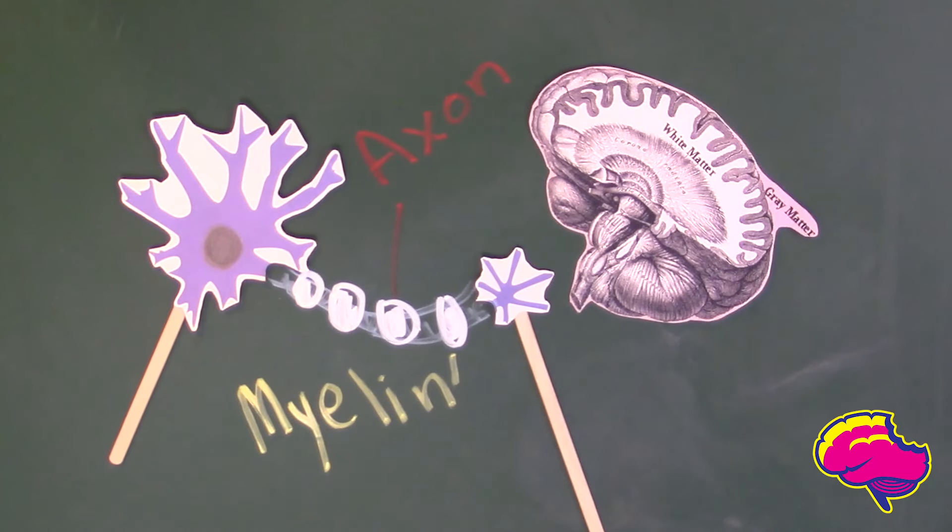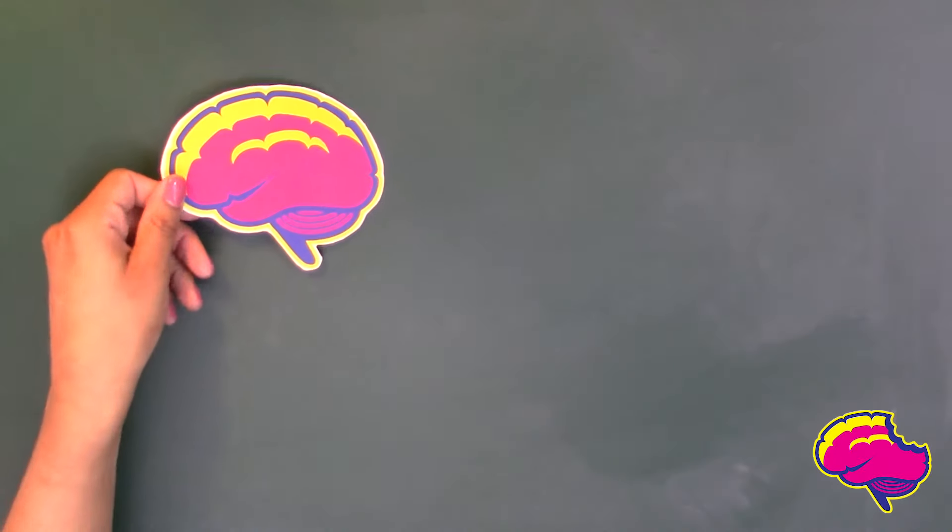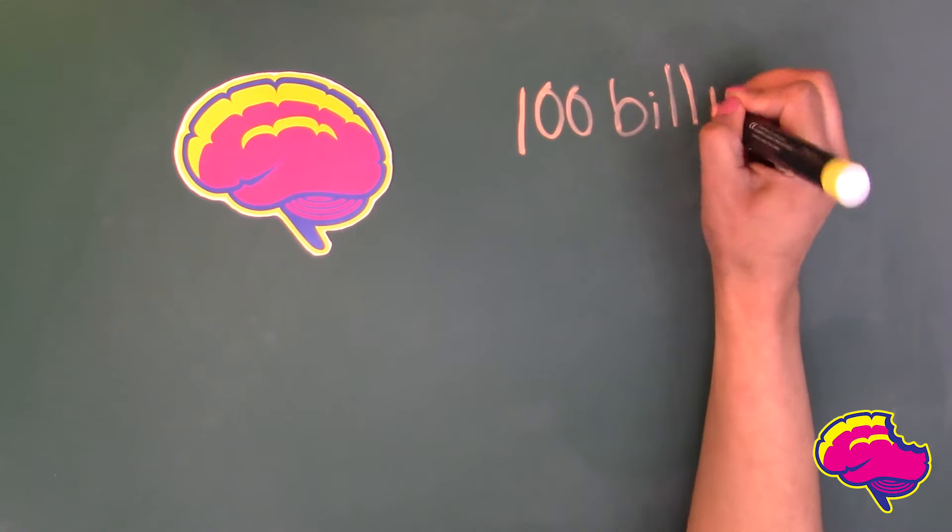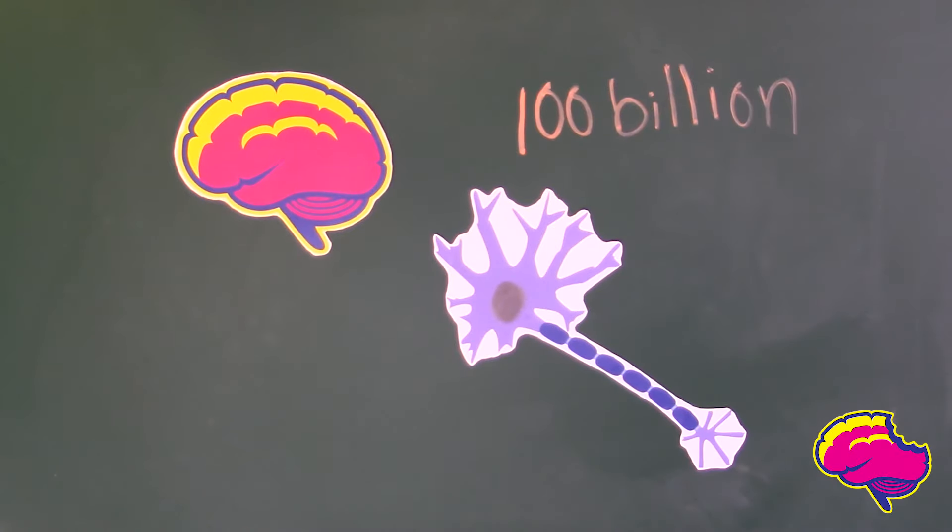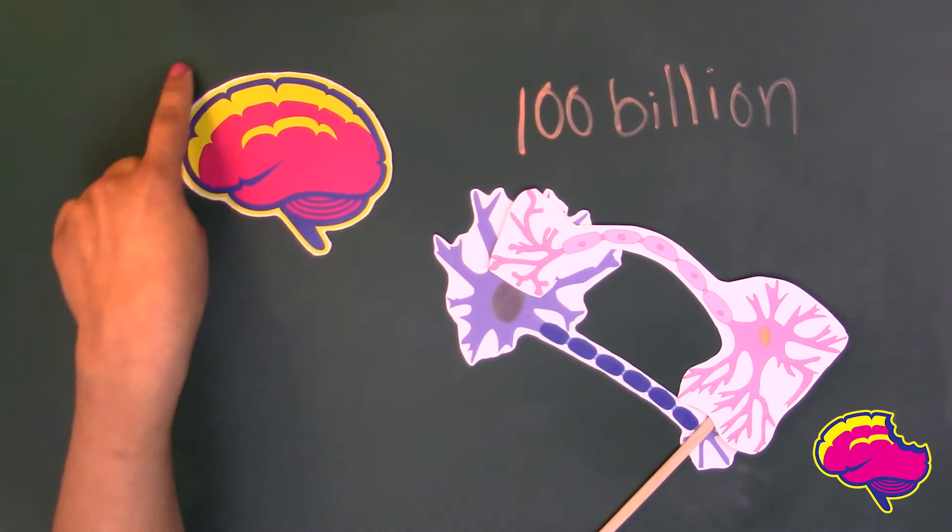Thus, white matter enhances communication between brain cells and areas of the brain. Overall, a healthy adult brain consists of more than 100 billion neurons of differing types that comprise the folds and ridges of the human cortex.